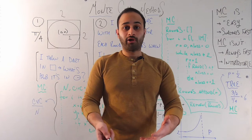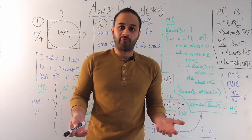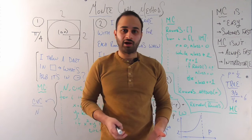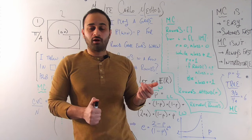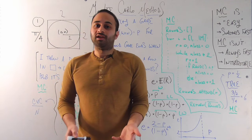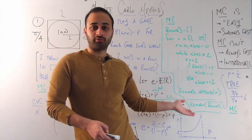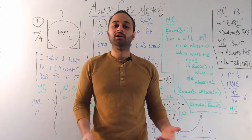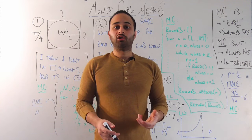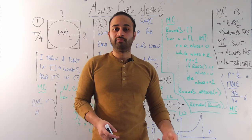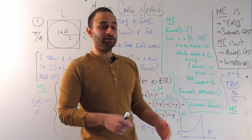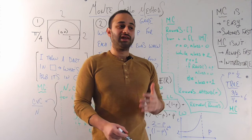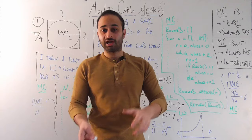The big takeaway from this second example is not the specific probability problem itself — this is not a probability-solving video. This is showing you that some problems require a lot of thinking and clever problem solving. But if all you're after is that number — the expected number of rounds for some given value of p — then you might as well just code a solution. This didn't take too long to write, and you'll get pretty close to the answer. If you want even closer, just make the number of samples bigger. That's a great segue into discussing what Monte Carlo methods are and are not.